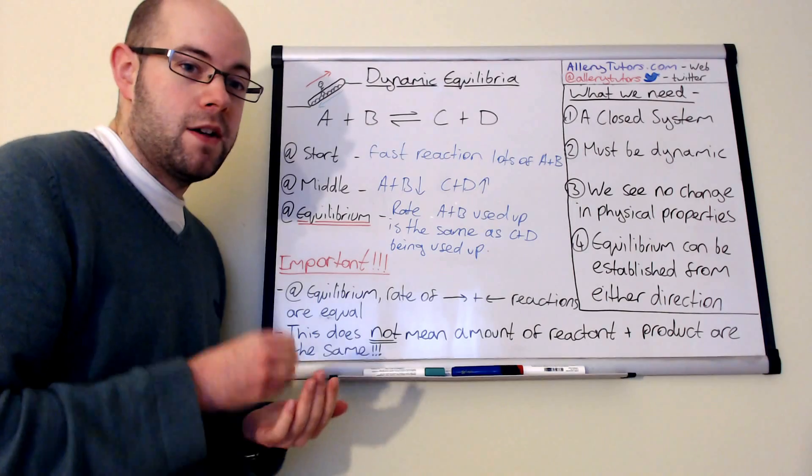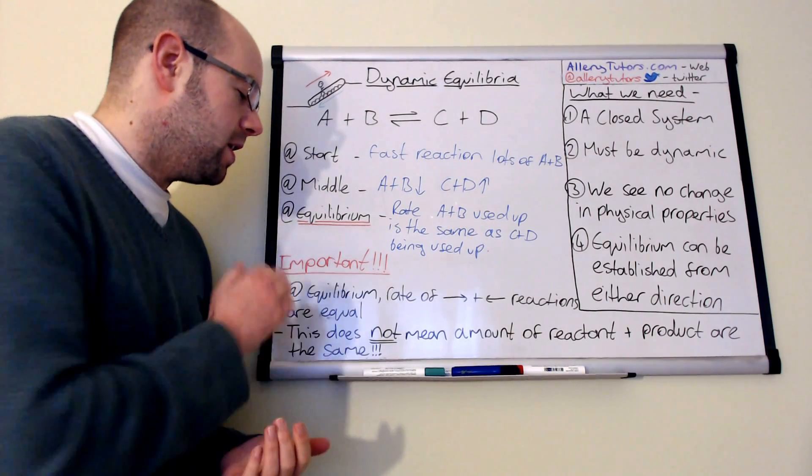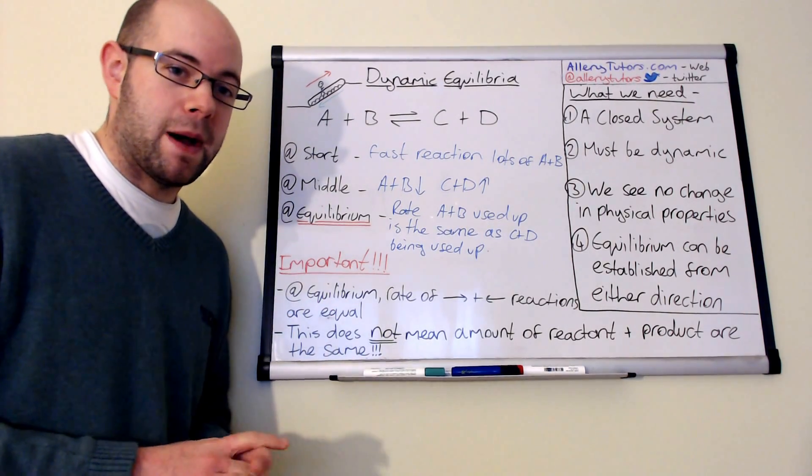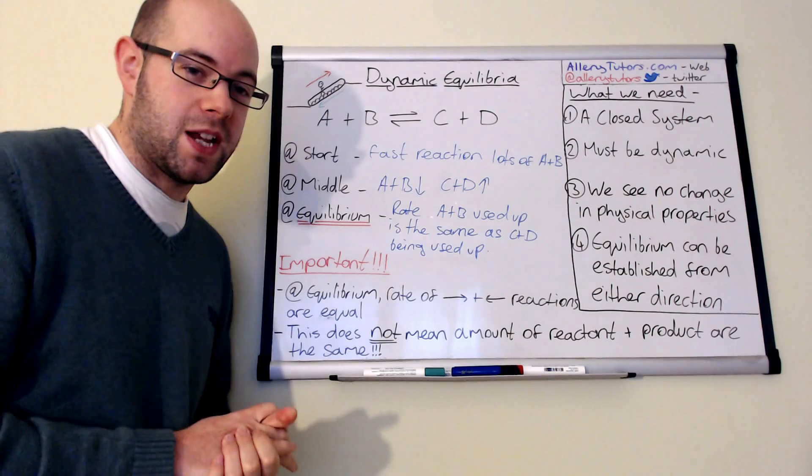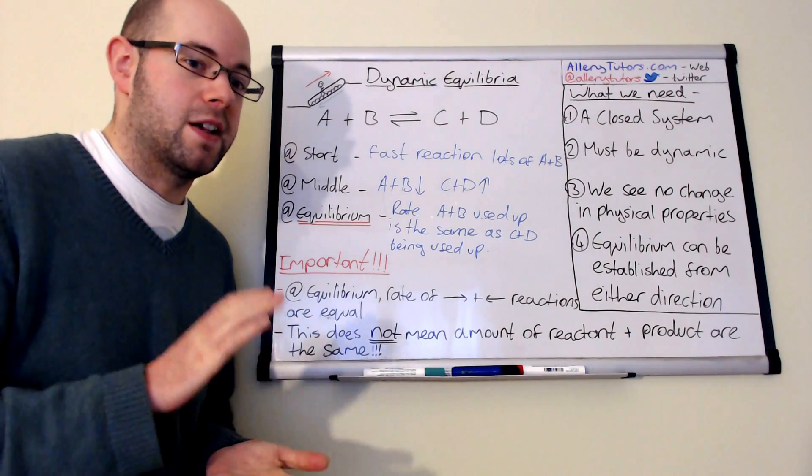And it's a really common error for students to make in exams as well, is that they talk about the amount of A and B equals the amount of C and D at equilibrium. And that's not the case, it's the rate.